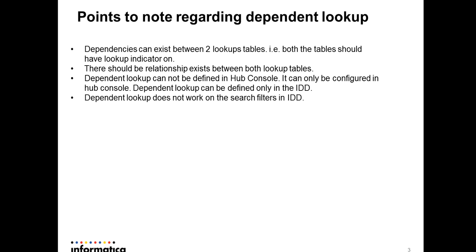Dependent lookup doesn't work on the search filter in IDD. When you create a true dependent lookup — say state is dependent on country — and you create a new record using both lookups, for example an address using state and country fields, you will see the dependency. However, the dependent lookup will not work when you do a search on the same subject area, such as address, with a filter on the state column. The state and country will show all values irrespective of whether they are independent or dependent.